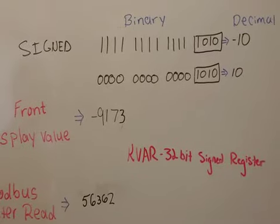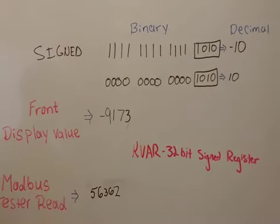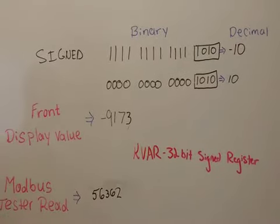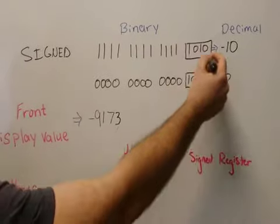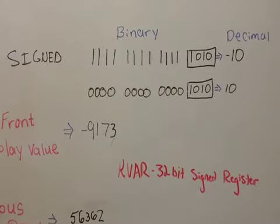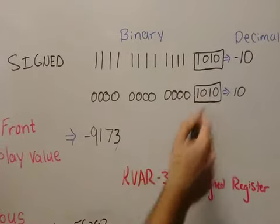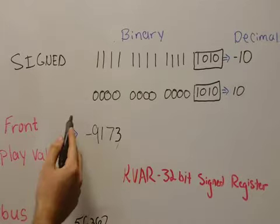Today we're going to be talking about signed and unsigned values. In binary, to represent a negative value, every integer in front of the value itself is going to be a one. And for a positive number, every integer in front of the value there is going to be a zero.